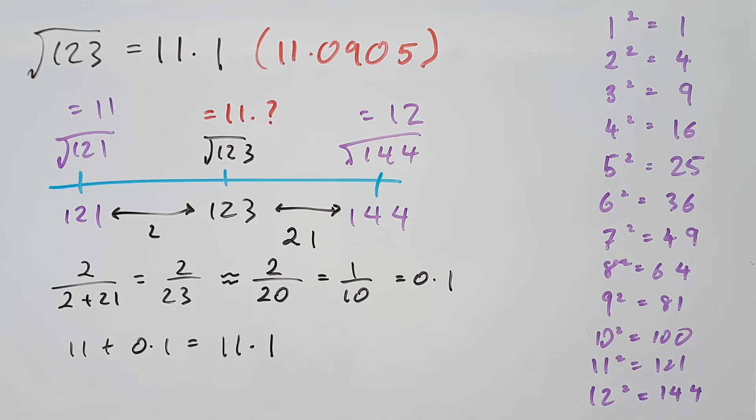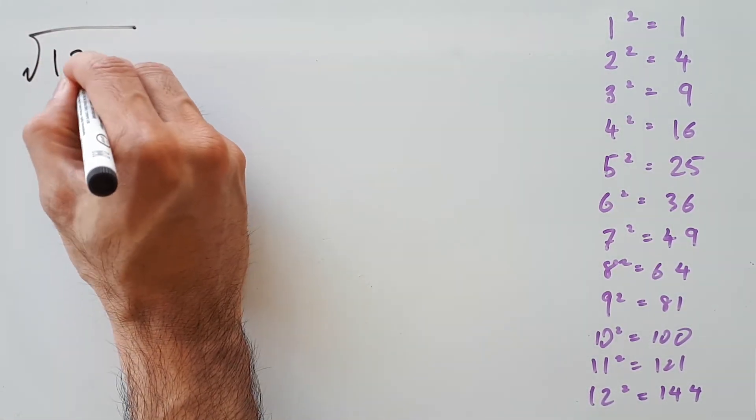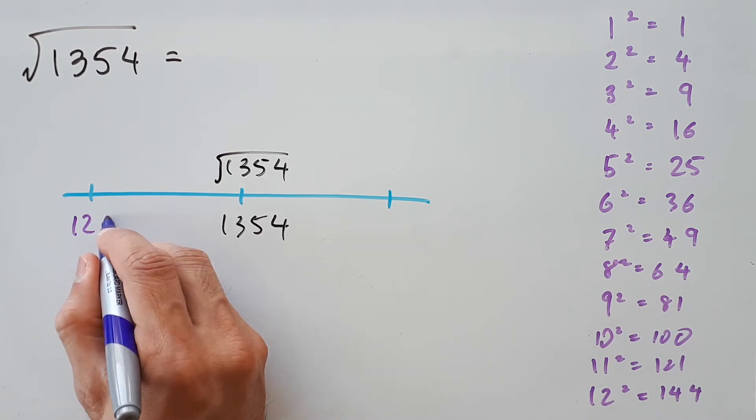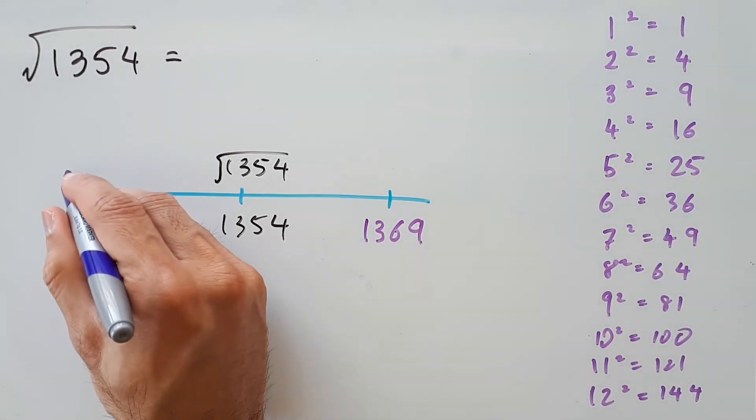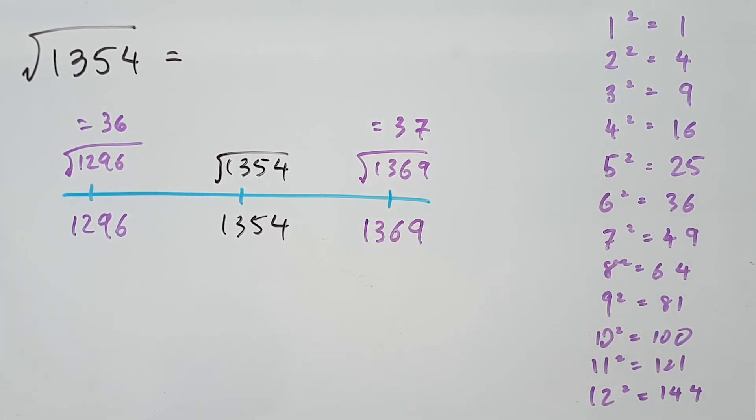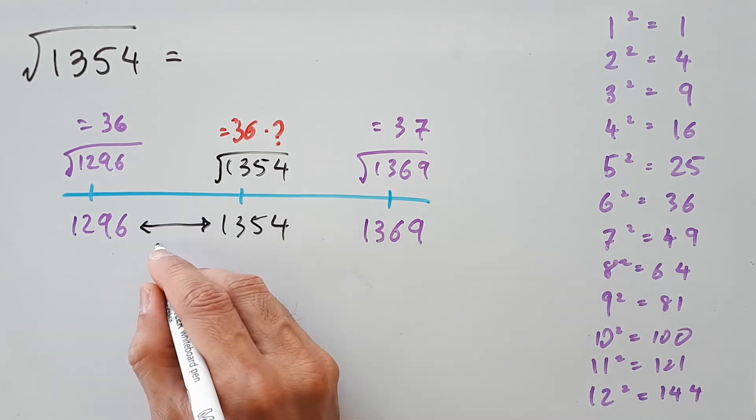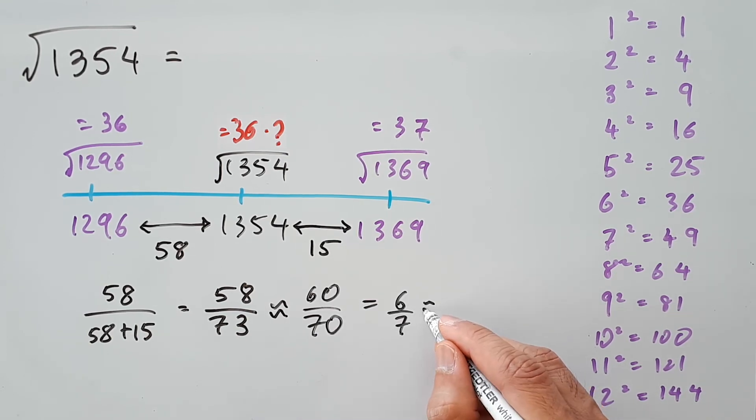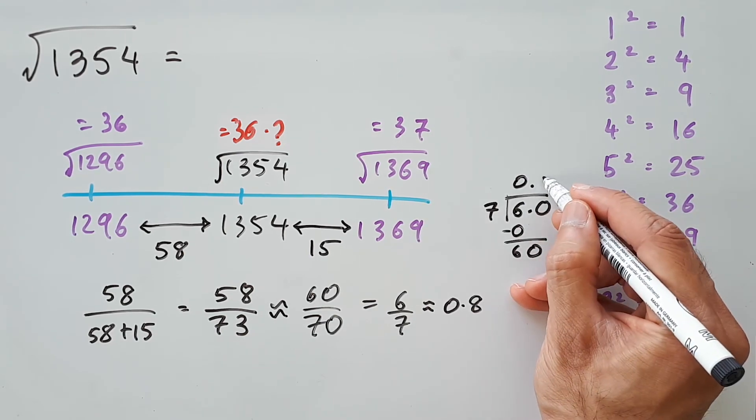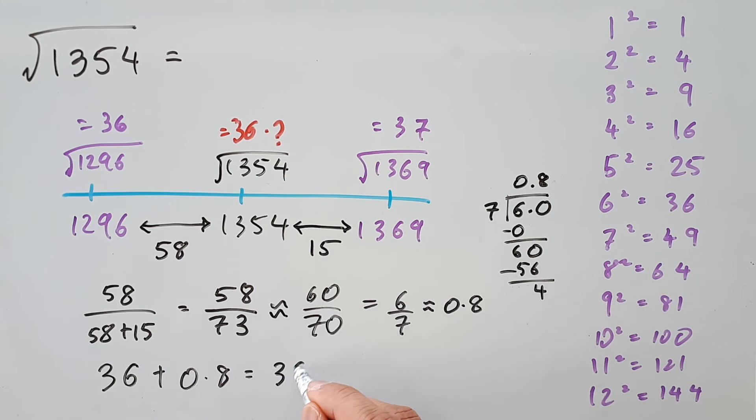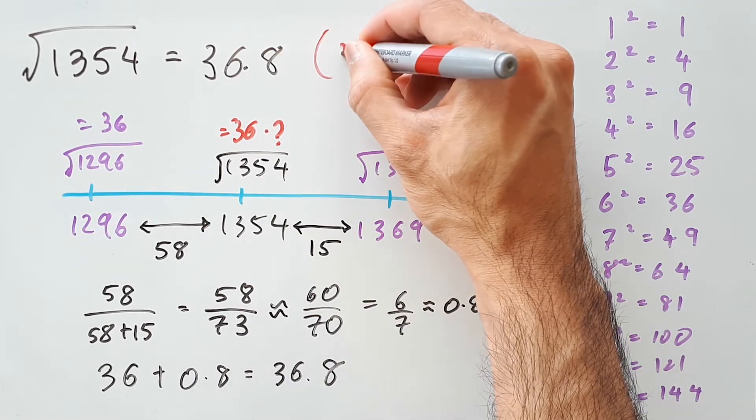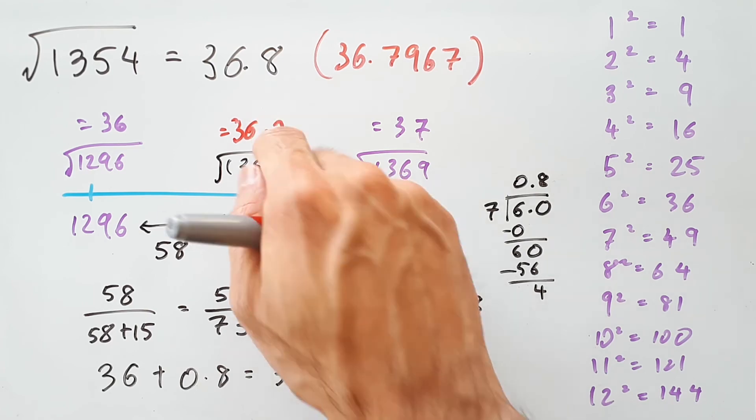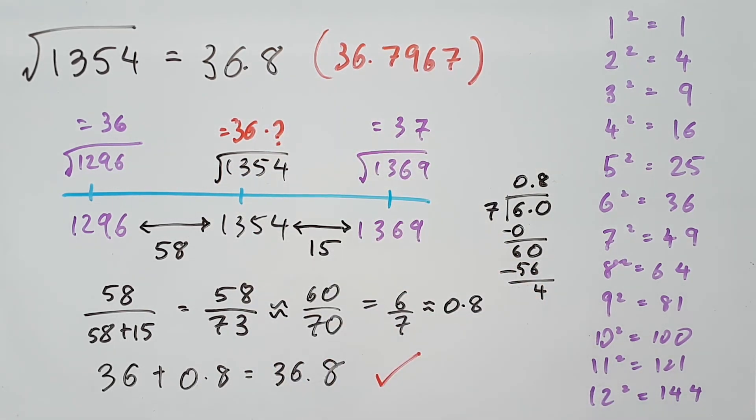Let's confirm this with our final question, which is way bigger: square root 1,354. Obviously this is not going to be within our perfect squares list. So I'm going to say that this is between the numbers 1296 and 1369, because those are the perfect squares of 36 and 37. So we expect the answer to be 36 point something. Carrying out our calculations, 58 on 73 is very similar to 60 on 70, so we can simplify that as 6 on 7, which is 0.8. And you can find that value by doing a long division up to the first decimal place. So putting that all together, the answer is 36.8. The precise answer is 36.7967, meaning our estimate was only off by 0.004 units, which is incredible. So that is a very, very accurate estimate.